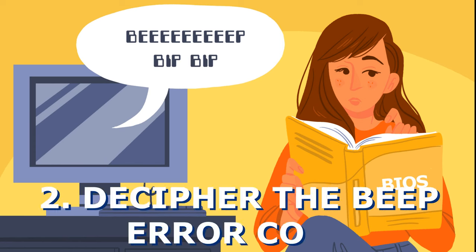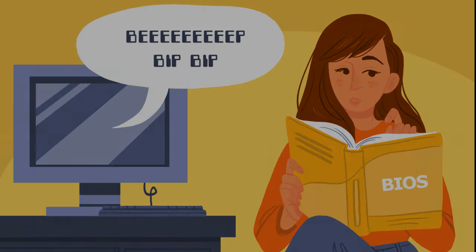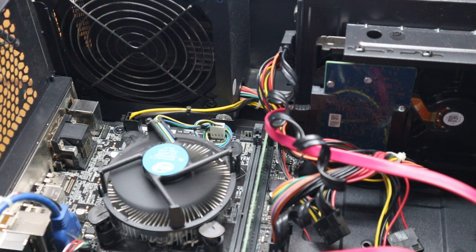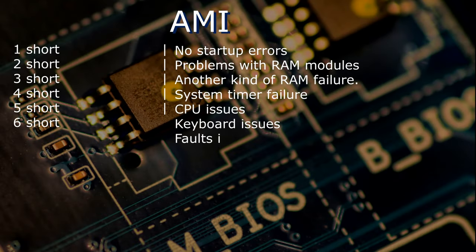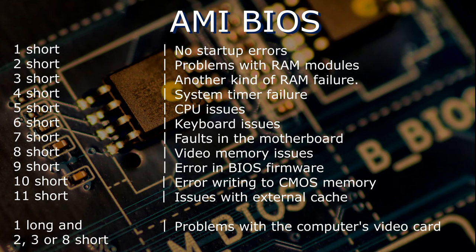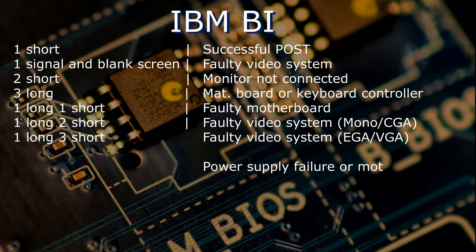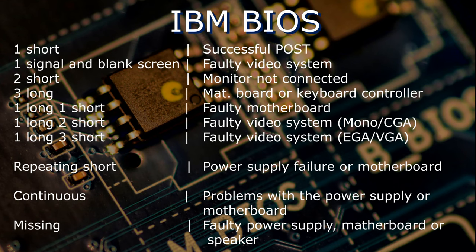Step two: decipher the beep error code. Some signals after turning on the PC may include long and short beeps, similar to Morse code. If you hear one short beep, the check was successful and everything is in order. If the signal is different, look at the table. For AMI, for example, two short beeps means a problem with the RAM — it is not installed correctly in the slot or is faulty. Five short beeps means a problem with the processor. One long and several short beeps indicate a problem with the video card. If the manufacturer is IBM, the signals will be different — look and compare with yours.